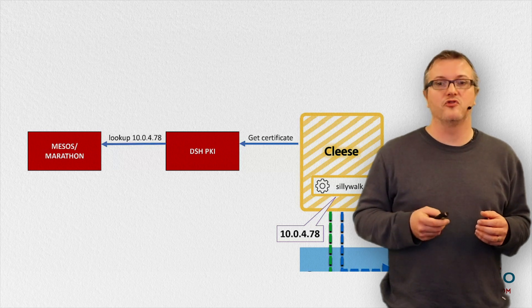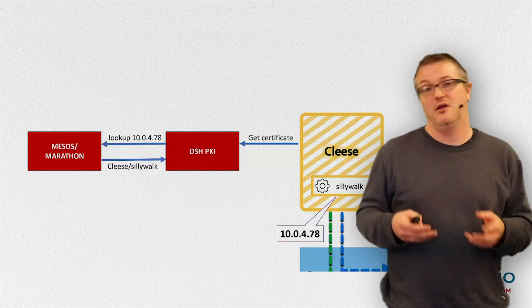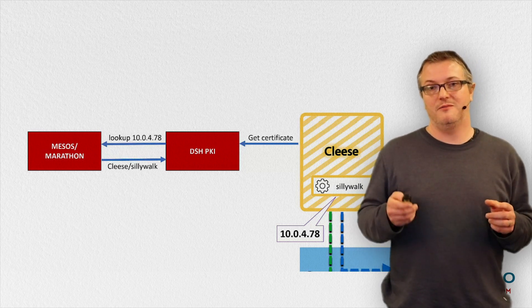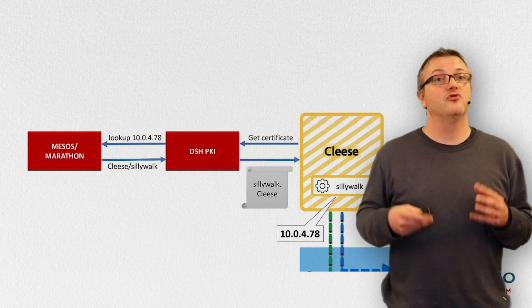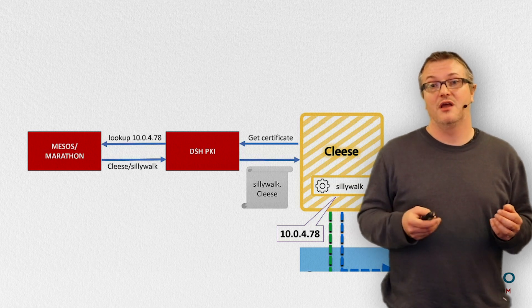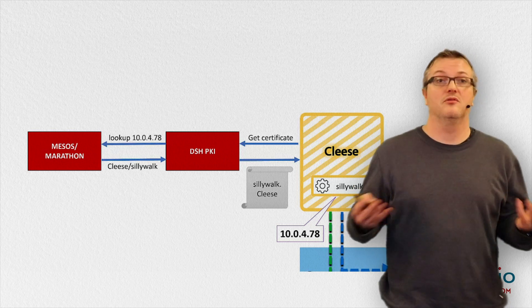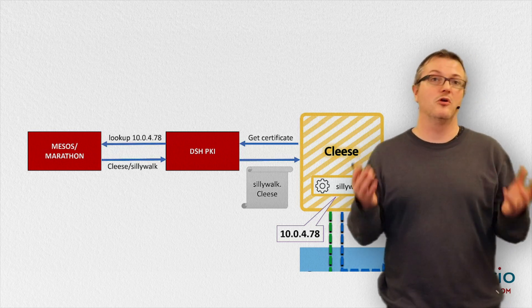Marathon responds to the PKI by telling this, yeah, the application ID is cleese slash sillywalk. From this, the PKI knows enough to generate the entire certificate, hands it back to the container, which can then actually do its connection to Kafka, which closes the circle.